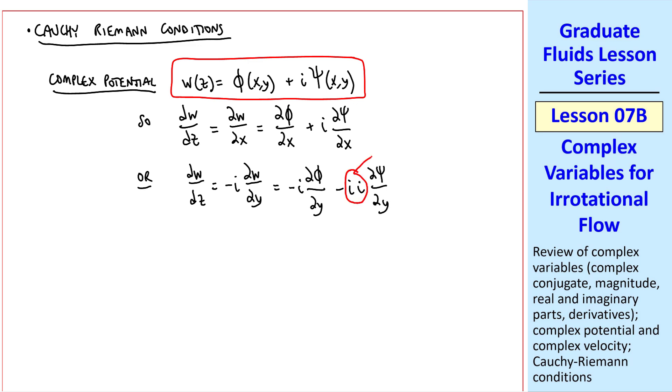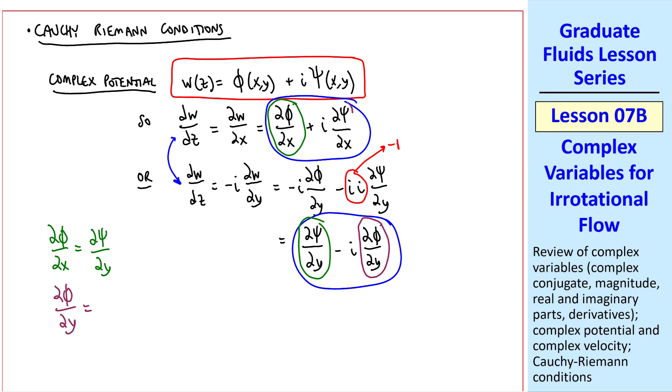Well, we know, of course, that i times i is negative 1, and these two negatives cancel. So rearranging, this is del psi del y minus i del phi del y. But since the left hand sides are the same, the right hand sides must also be the same. And noticing that the real and imaginary parts are already separated, we can see that del phi del x must equal del psi del y, and del phi del y must equal negative del psi del x.